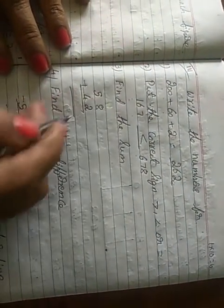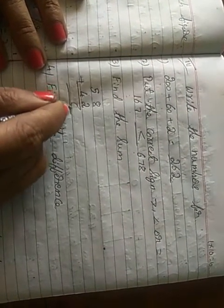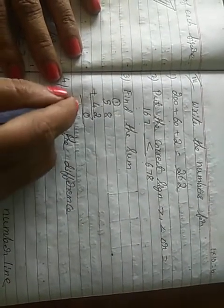Find the sum. 8 plus 2 is 10. Write 0, 1 carry. 1 plus 5 is 6, 6 plus 4 is 10.